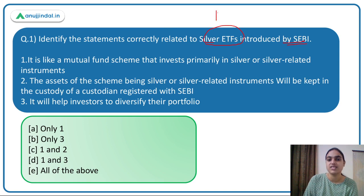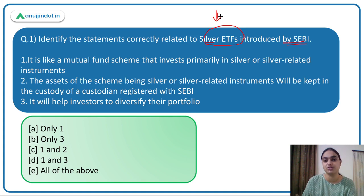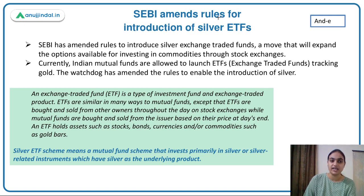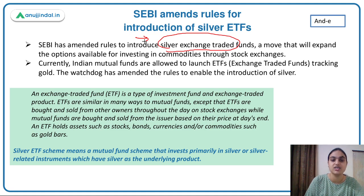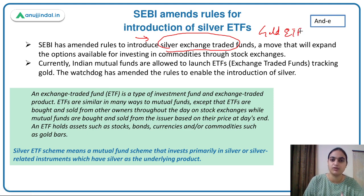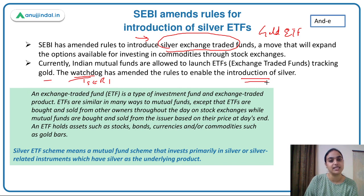SEBI proposed the introduction of silver exchange traded funds and has now amended the rules to introduce these ETFs. This will be a new option available for investors to invest in commodities through stock exchanges. Earlier there were gold ETFs; we did not have the option to trade in silver ETFs, but now that option will also be available. Currently, Indian mutual funds are allowed to launch ETFs tracking gold, and now SEBI has amended the rules to introduce silver ETFs as well.